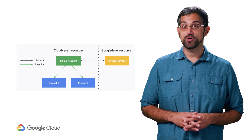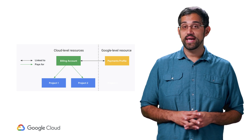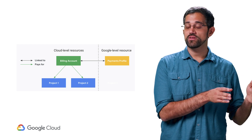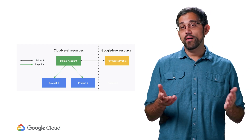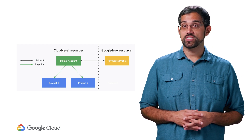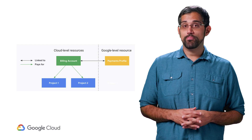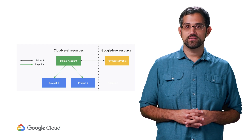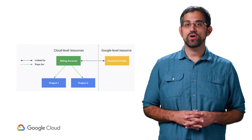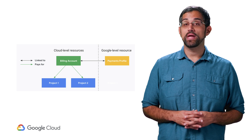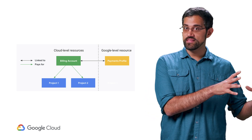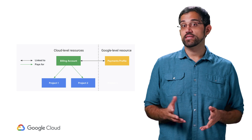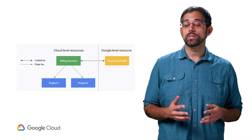All services need to exist as part of a project, and each project will need to have a single billing account associated with it. Though a billing account can have multiple associated projects, and the billing reports and invoice will be able to break down costs by project. Billing accounts will also be directly linked to a Google payments profile, which sits outside the cloud and is used to pay for all Google services, like G Suite and Google Ads.